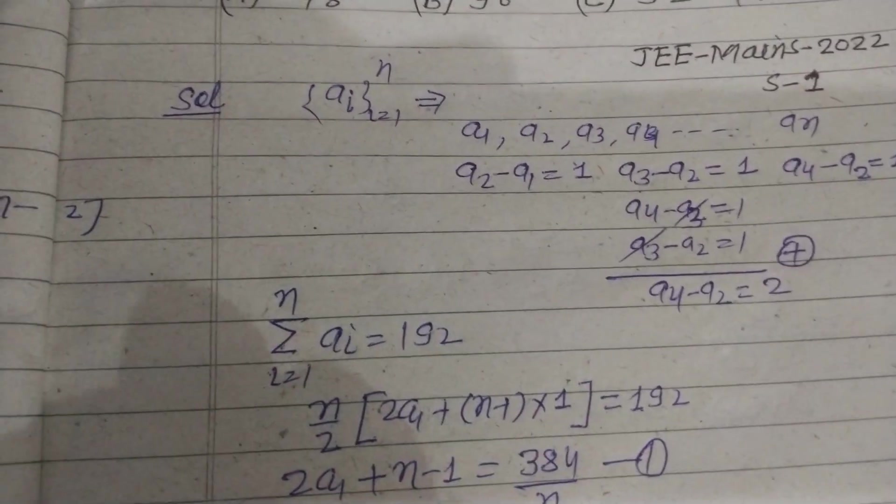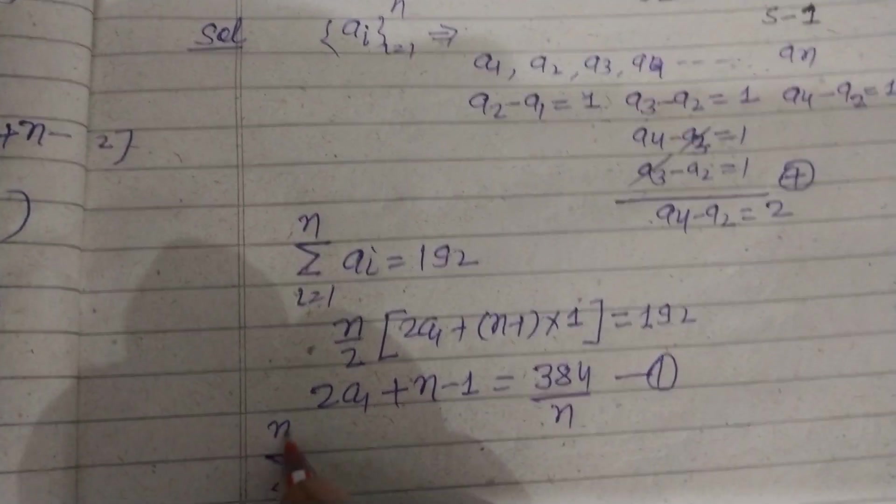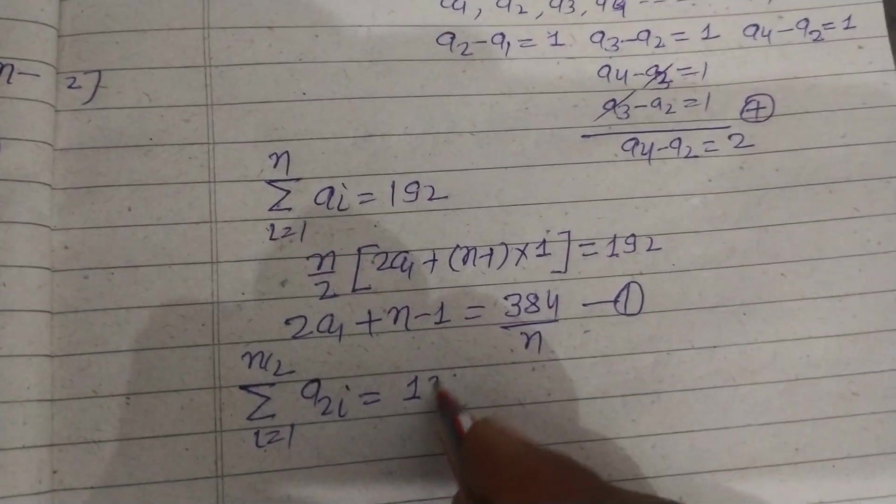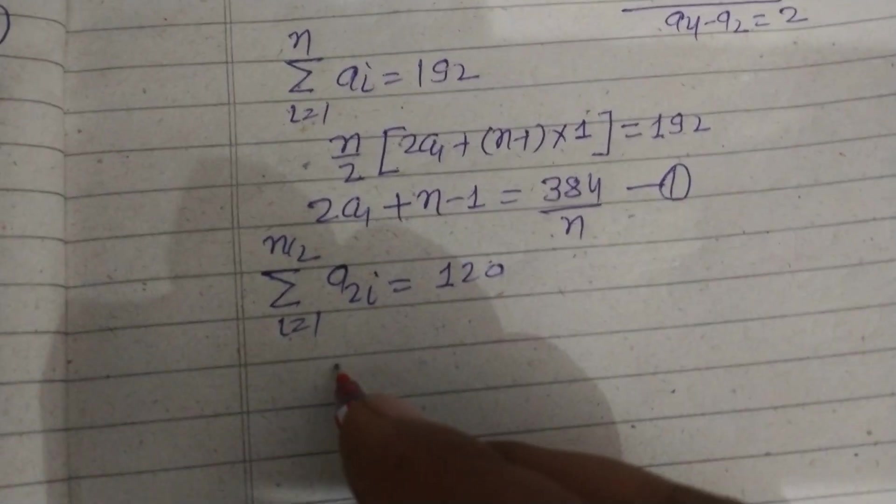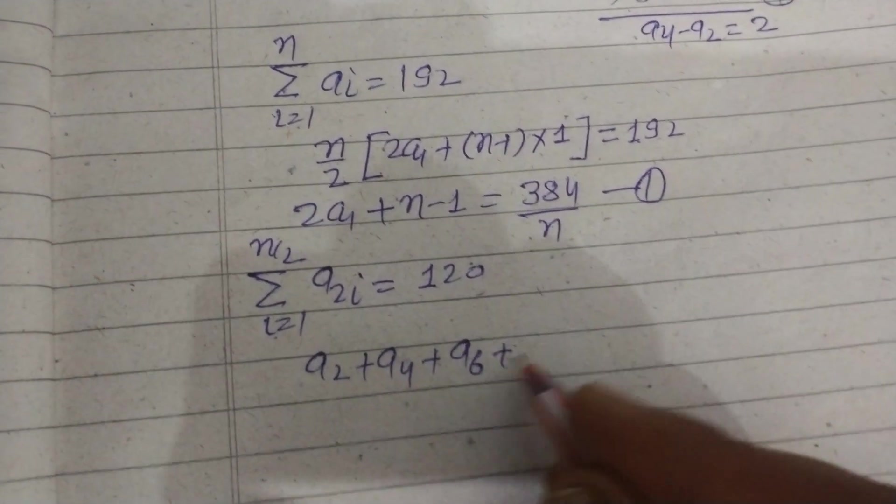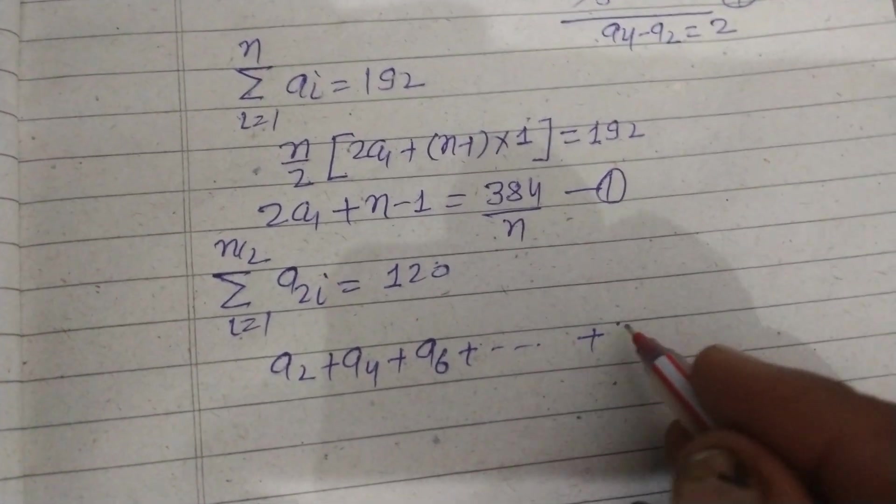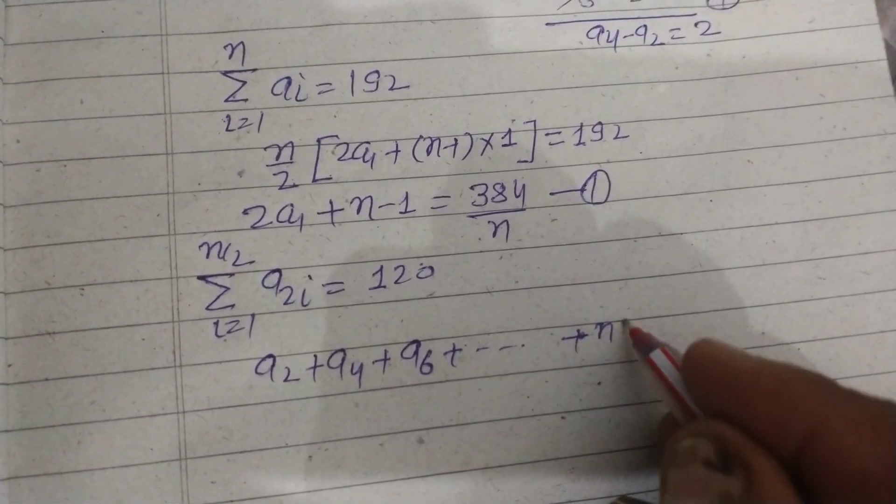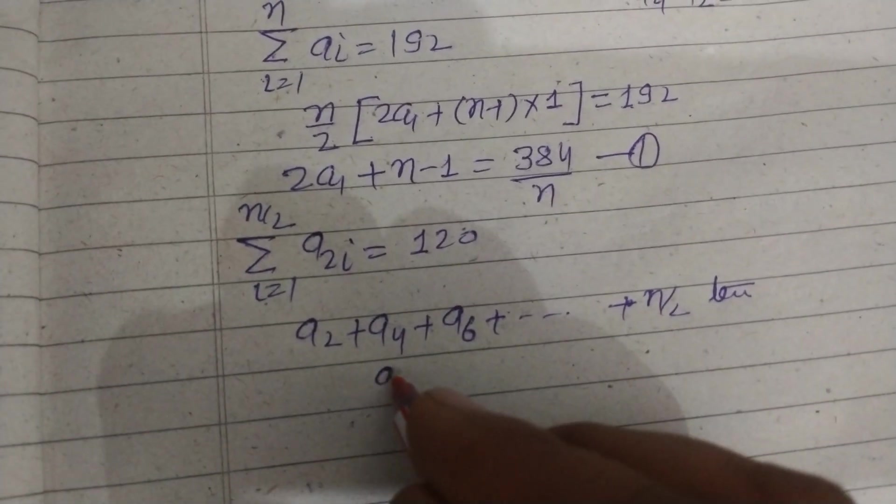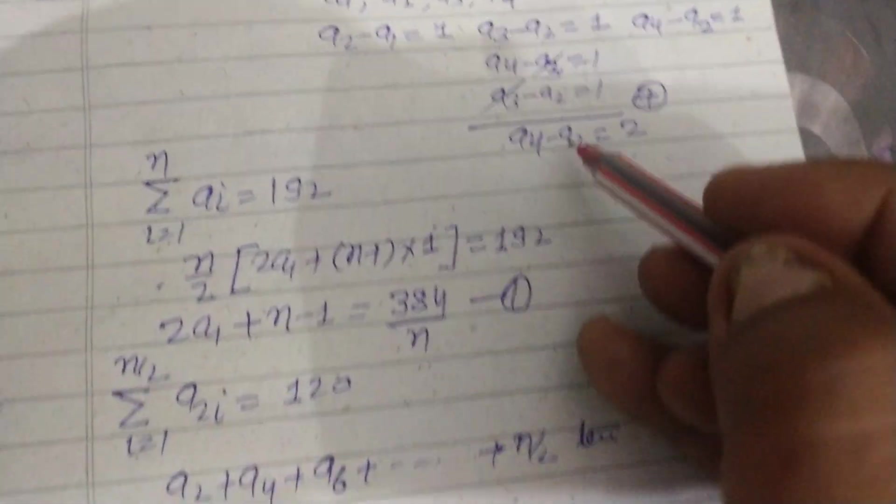Now it is given that sigma i=1 to n/2 of a2i equals 120. So a2i means a2 plus a4 plus a6 and so on up to n/2 terms. The common difference of this series is a4 minus a2, which we have already found to be 2.